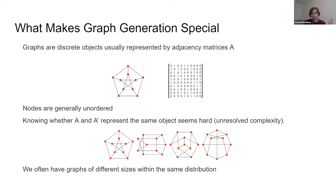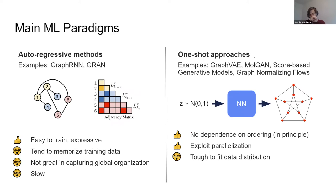There are many traditional generation approaches, but as machine learning people, let's look at how ML approaches work. The two main approaches are autoregressive or one-shot. In autoregressive models, we cheat a bit by imposing some arbitrary ordering on the nodes, and then generate the graph one node at a time. We take a node and try to add it back into the graph by checking which edges make sense. They're very easy to train, but generation is slow because the process is sequential. They're also more prone to data memorization because we usually train them with maximum likelihood of edges added at every step.